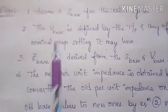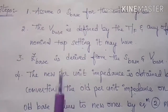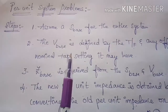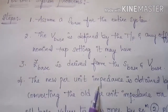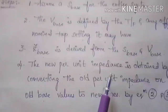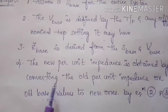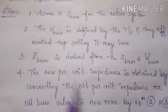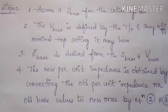After finding the base impedance values, we calculate the new per unit impedance values. In this problem we need to draw the per unit impedance diagram. The new per unit impedance values are calculated by converting old per unit values on old base values to new ones. These are the steps to calculate the per unit impedance diagram.